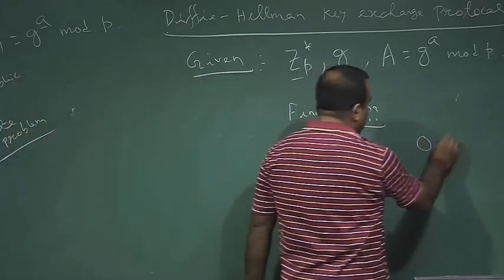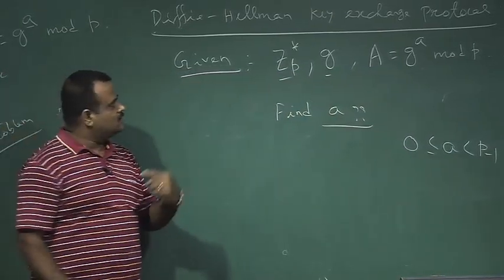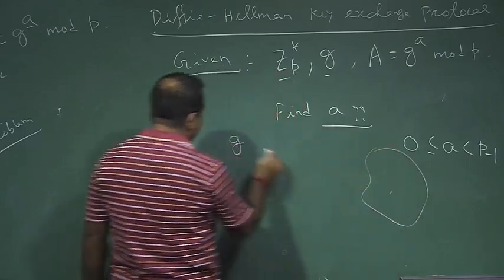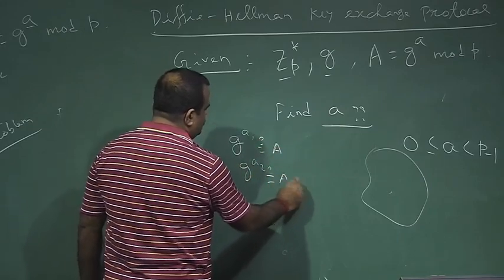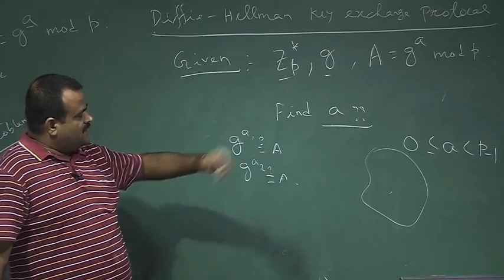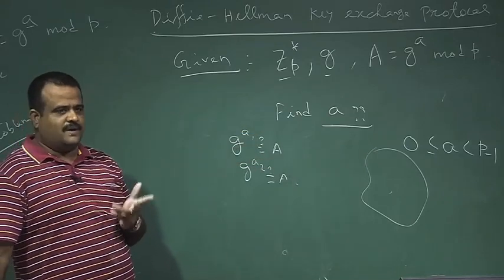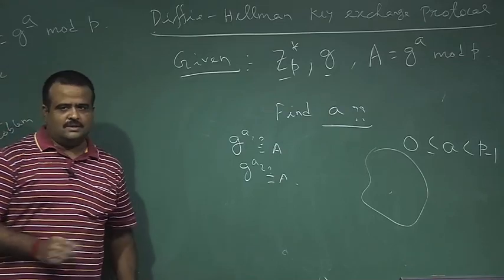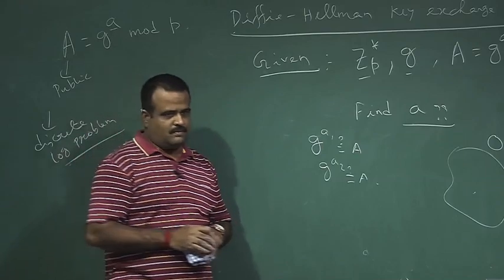One approach is brute force: try all possible values of a, computing g^1, g^2, and so on, checking against capital A. However, the attack time is proportional to the size of the prime p. That is why we must choose p to be a large prime — then the Discrete Logarithm Problem is hard. We will discuss this in more detail when we cover the ElGamal cryptosystem, which is also based on the hardness of the Discrete Logarithm Problem.